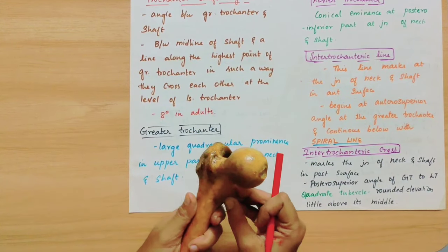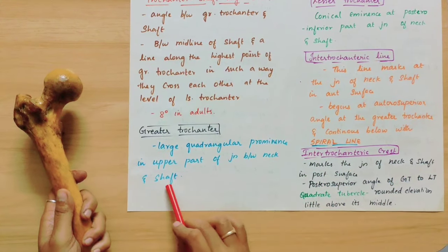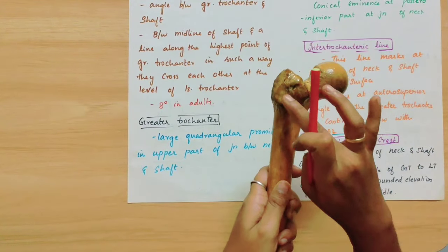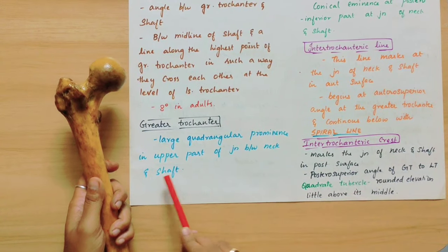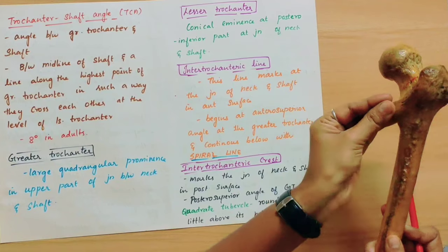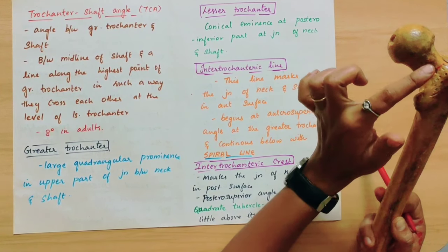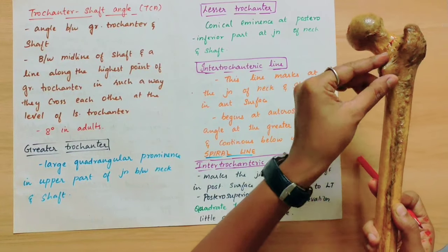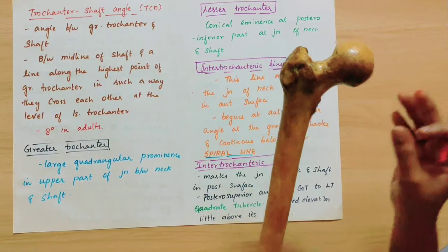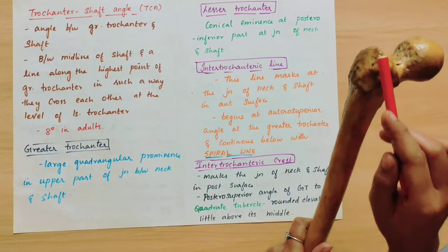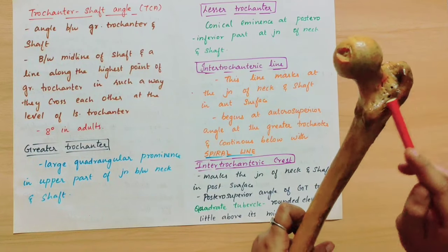Now, the greater trochanter is a large quadrangular prominence in the upper part of the junction between the neck and the shaft. The lesser trochanter is a conical eminence at the postero-inferior part at the junction of the neck and the shaft. So the greater trochanter is quadrangular in shape, and the lesser trochanter is conical and located posteriorly and inferiorly. Between them anteriorly is the intertrochanteric line, and posteriorly is the intertrochanteric crest.